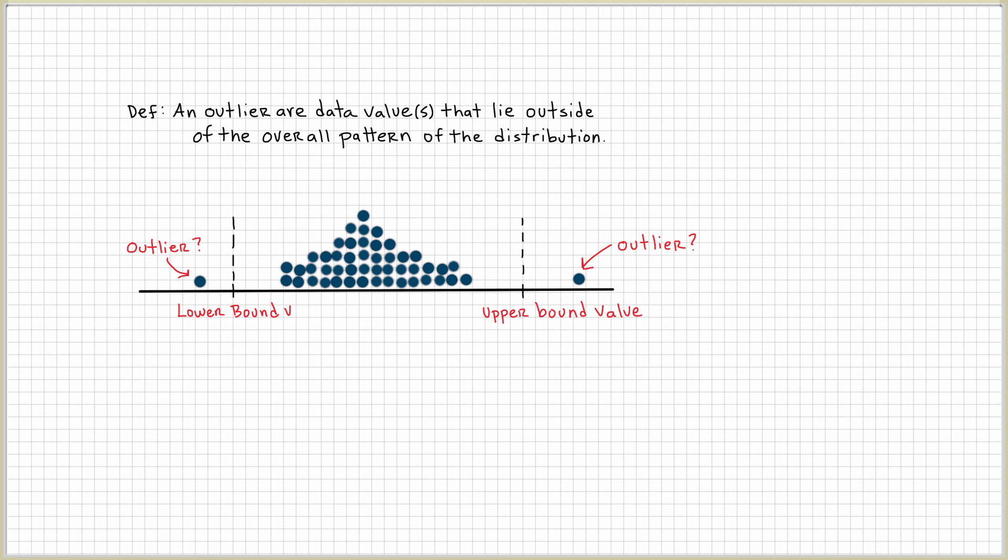On the other side, we're going to calculate something called the lower bound value. Anything below that, we're going to consider any data points to be outliers. Let's do an example to figure out how to do this.